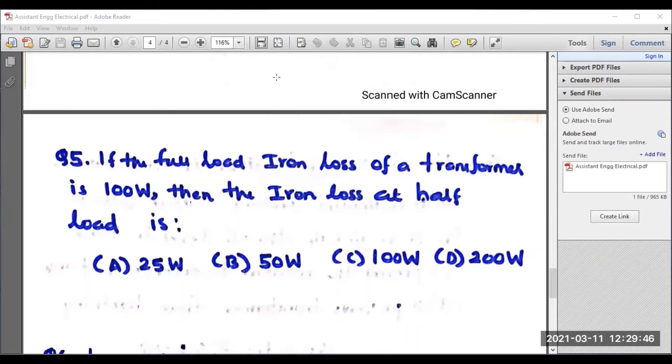Question five: If the full load iron loss of a transformer is 100 watts, then the iron loss at half load is 25 watts, 50 watts, 100 watts or 200 watts. If I consider the load, X is the fraction of load. Then the total losses, P is equal to PA plus X square into PC, where PA means iron loss and PC is known as copper loss.